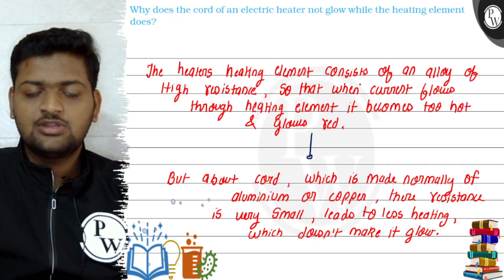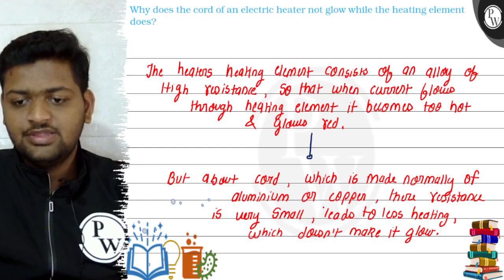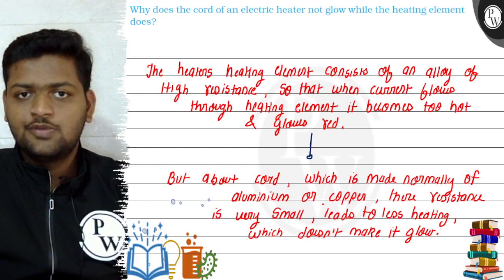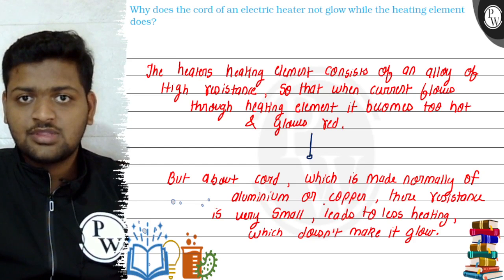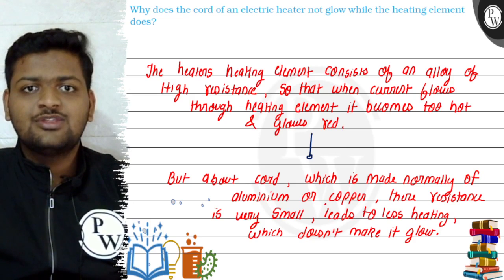So the heater's heating element consists of an alloy that leads to more heating and glowing. In contrast, aluminum or copper doesn't have that high resistance compared to the alloy, so it doesn't lead to heating. This is our answer to the question. Thank you!